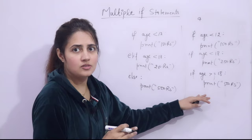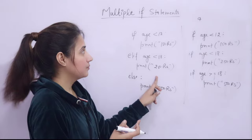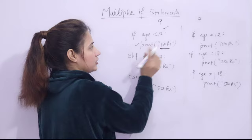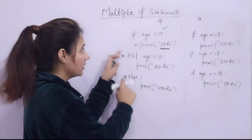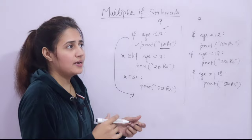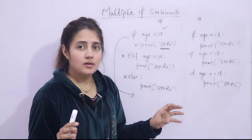We want only one condition to execute — either this, this, or this. So it is better to use elif: if age is this, elif this, else this. If age is 9, the first condition is true, that statement executes, and the remaining conditions are completely skipped. This is more convenient and less time-consuming. However, sometimes even if the first condition is true we still want to check another condition — in that case we use multiple if.